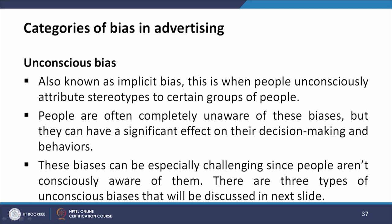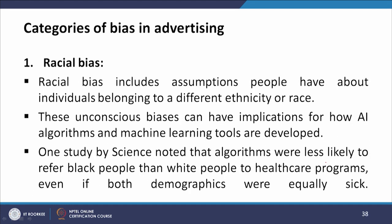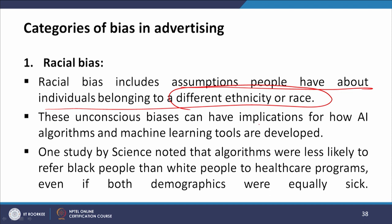The first type of unconscious bias is racial bias. Racial bias includes assumptions people have about individuals belonging to different ethnicities and races. These unconscious biases can have implications for how AI algorithms and machine learning tools are developed. One study by Science noted that algorithms were less likely to refer Black people than white people to healthcare programs, even if both demographics are equally sick.